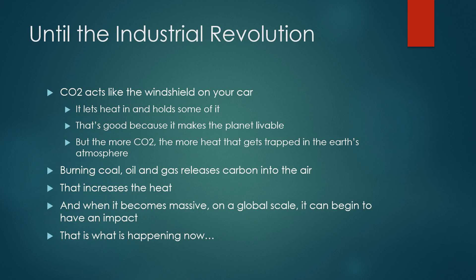That was good until the Industrial Revolution. The Industrial Revolution started releasing a whole lot of CO2 into the atmosphere. Carbon dioxide acts sort of like the windshield in your car — it lets heat in and holds some of it in, which makes the Earth hospitable. The more we put into the atmosphere, though, the more heat it traps and the less heat it lets out — similar to how your car's windshield lets heat in but won't let it out. Burning coal, oil, and gas releases carbon into the air and increases the heat. When it becomes massive on a global scale, it can begin to have an impact. If you travel anywhere in the world, you'll see cars everywhere. Power generation in many places, especially in Asia and China, is done by burning coal — massive amounts of coal.